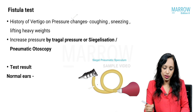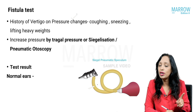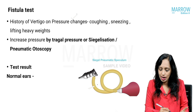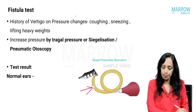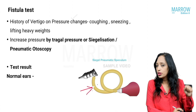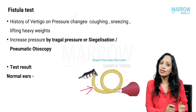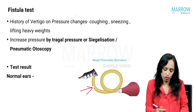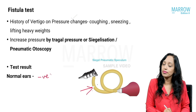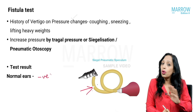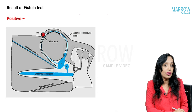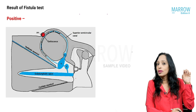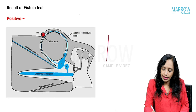When a patient comes with a history of vertigo on pressure changes, you will do the fistula test. You perform this test using a Siegel's speculum, by which you increase and decrease the pressure of the external ear canal. In normal ears, this is not supposed to cause anything, so in normal ears the fistula test will be negative — there will be no vertigo, no nystagmus on increase and decrease of pressure. But if the test is positive, it means that on changes of pressure there is vertigo.